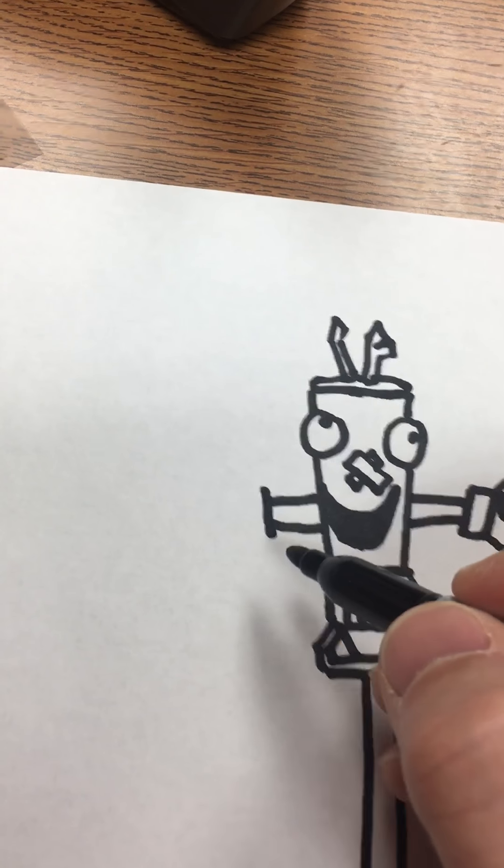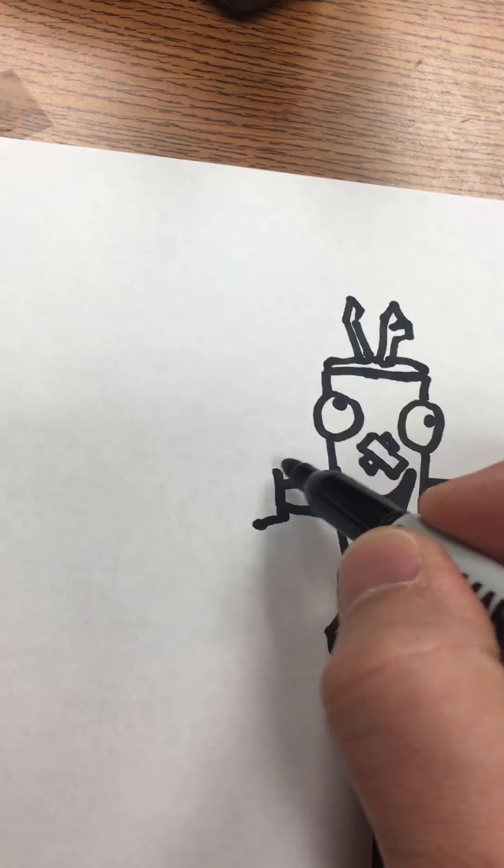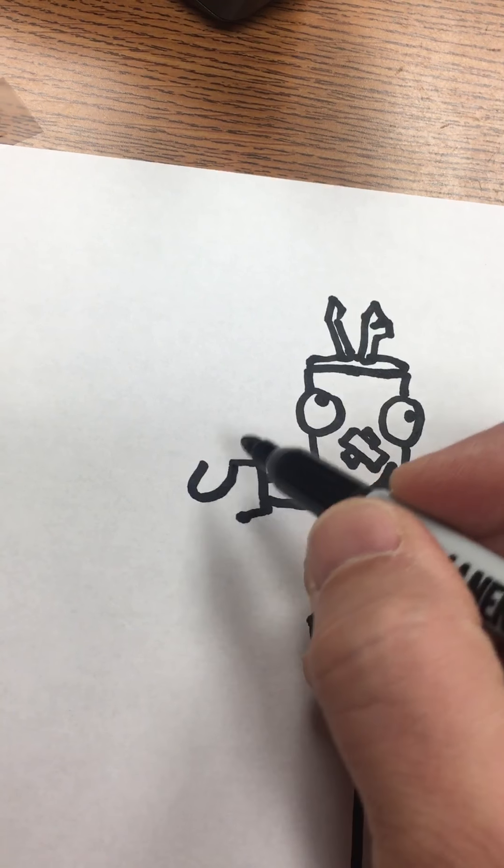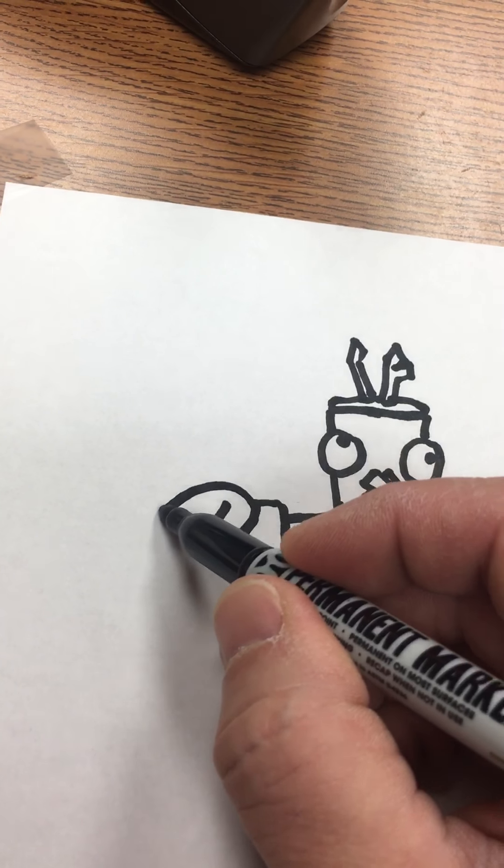And on this side kind of the same thing. Except I'm going to make the thumb. Looks like this. Kind of a rough circle.